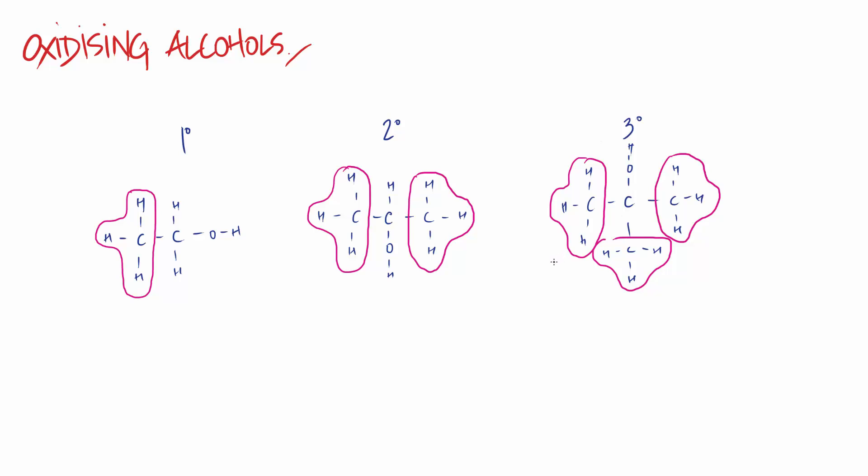Tertiary alcohol: look at the carbon attached to the hydroxy group, we have three alkyl groups. One, two, three. Primary, secondary, tertiary. Done. That is all there is to the classification of alcohols, but that underpins the whole oxidizing or the oxidation of them.